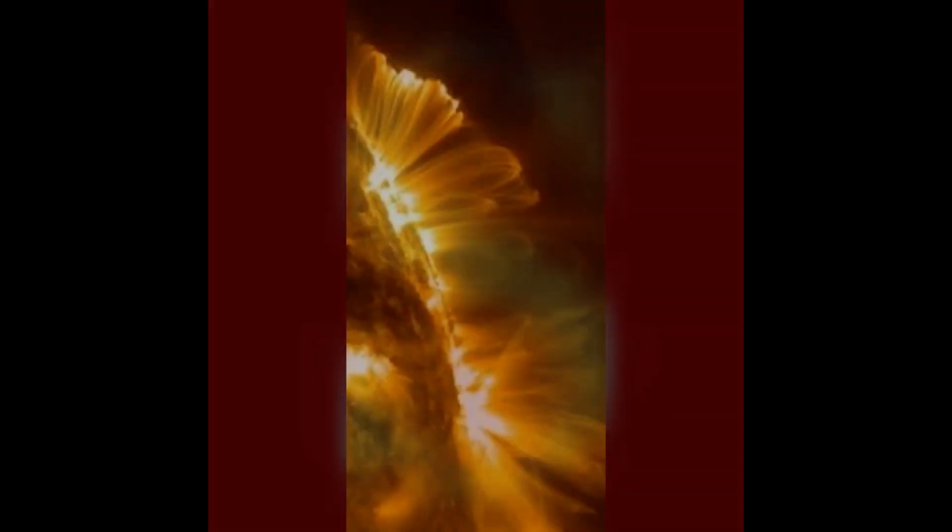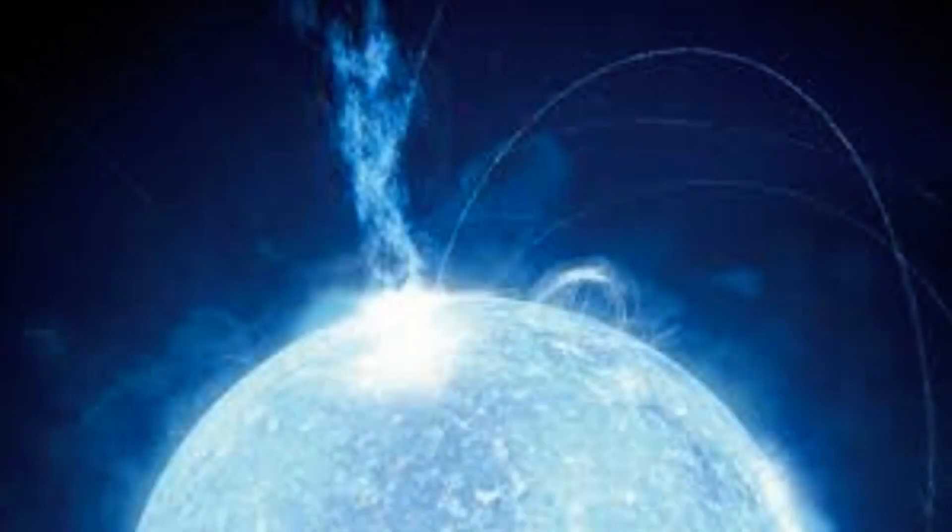CMEs can be triggered when a storm on the surface of the sun causes a whirlwind to form at the base of plasma loops that project from the surface. These loops are called prominences and when they become unstable they can break, releasing the CME into space.